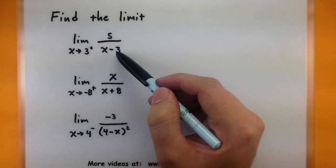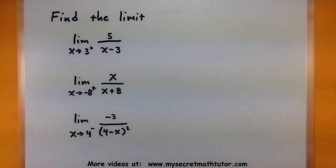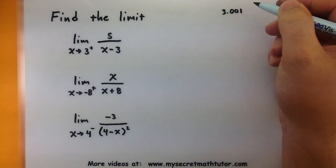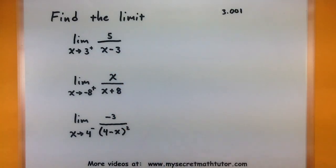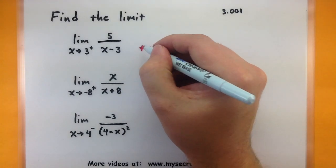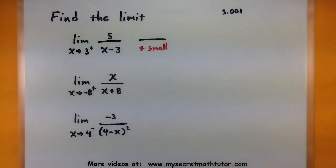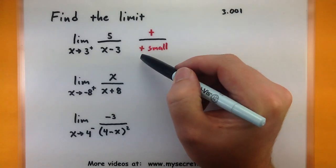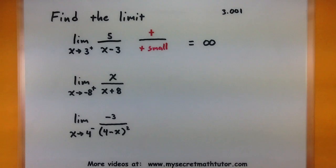We have to think about the signs on the top and bottom. I'm approaching 3 from the right side, so I'll have values just a little bit larger than 3, something like 3.001. If I use values like this for x and subtract 3, I'd end up with something very very small but definitely positive. So the bottom is getting small but staying positive. Meanwhile the top is stuck at 5 — a positive 5. Since I have a positive value over a positive value, this limit is going towards positive infinity.